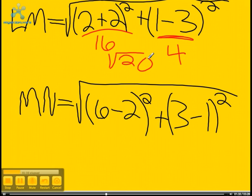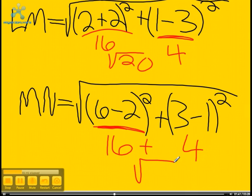Okay, NM would be 4 squared, which would be 16, plus 2 squared, which would be 4, and that would get radical 20.